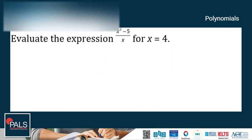Again, let's try another example. Evaluate the expression (x² - 5) / x for x = 4. Again, replace x by the given value, which is 4. We have 4² - 5 over 4, and then 16 - 5 over 4. The answer is 11/4. In algebra, the final answer is almost always left as a simplified fraction, even if it is an improper fraction.